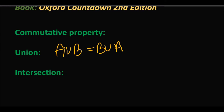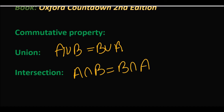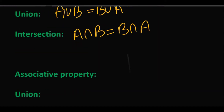इसी तरह से अगर हम intersection की बात करें तो A intersection B is equals to B intersection A. इन दोनों के case में similar answer आता है — union का left hand side, right hand side के equal आएगा और intersection का भी left hand side और right hand side के equal आएगा।